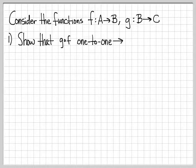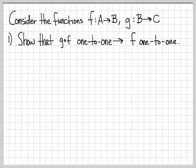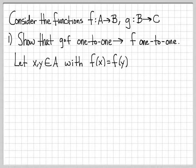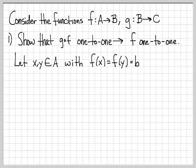we're going to show that g composed of f being 1-to-1 implies that f is 1-to-1. To establish that, I'm going to choose x and y in A with f(x) = f(y). I'm going to call that b, to simplify things — f(x) and f(y) are both equal to the same number, and I'll call it b, because f is a function from A to B, so f(x) and f(y) are both elements of B.